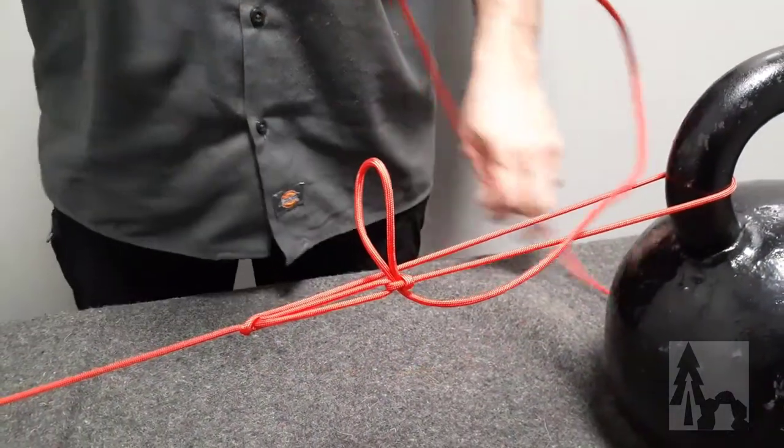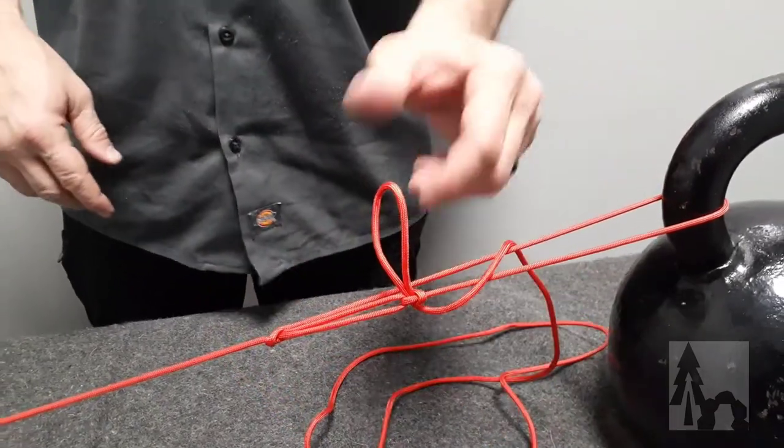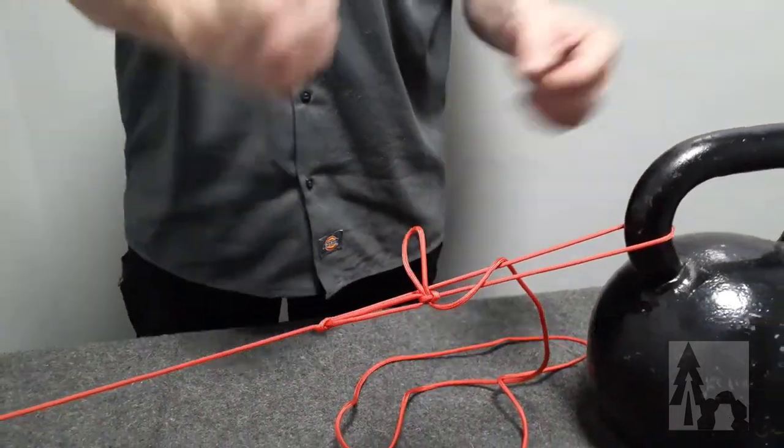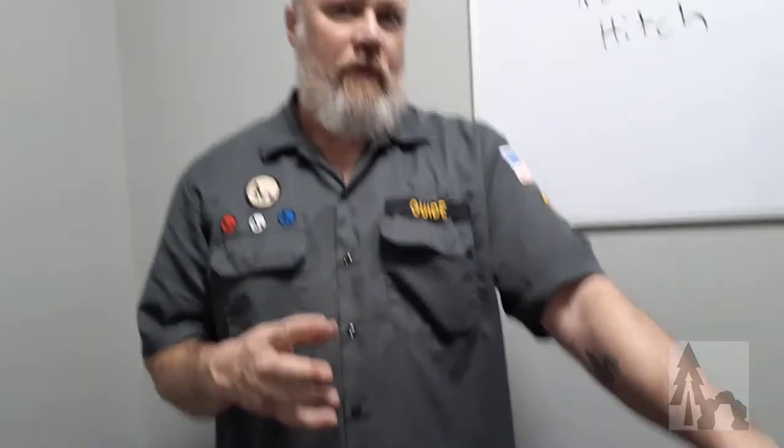All right, that's the trucker's hitch. Most often used when we're setting up a ridge line or shelters, we use that a lot to tie down loads or piles of firewood or other things. So lots of uses for it outside you'll see in other videos. This is just a quick reference video for the trucker's hitch. Like the video, subscribe to the channel, and check out some other cordage tool videos.